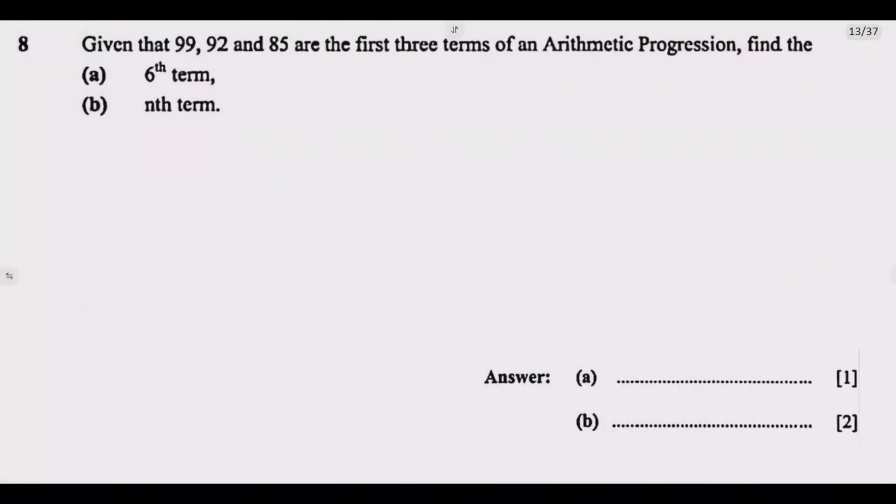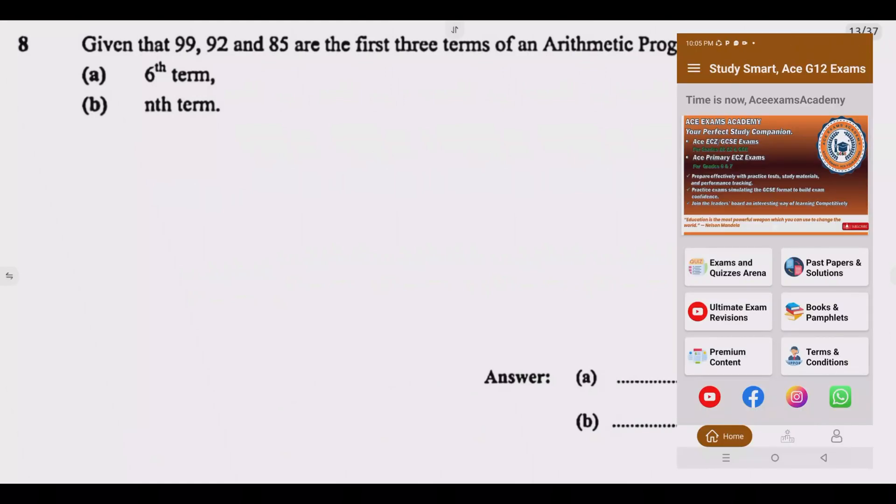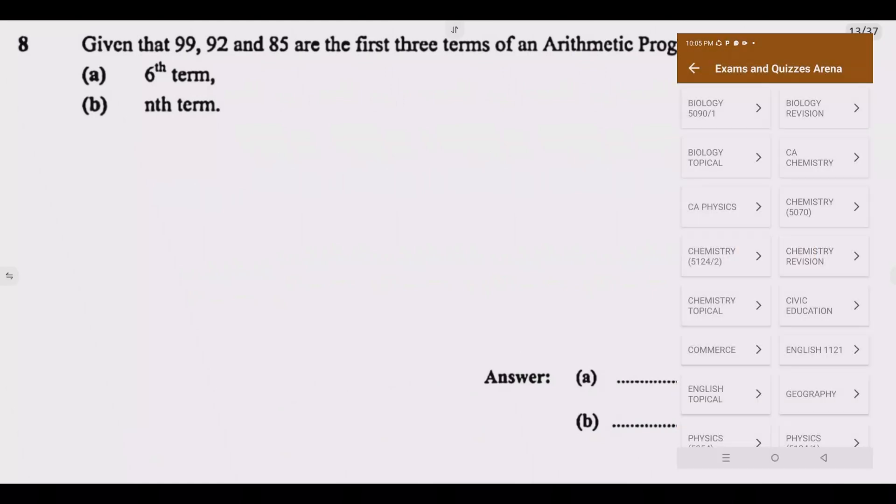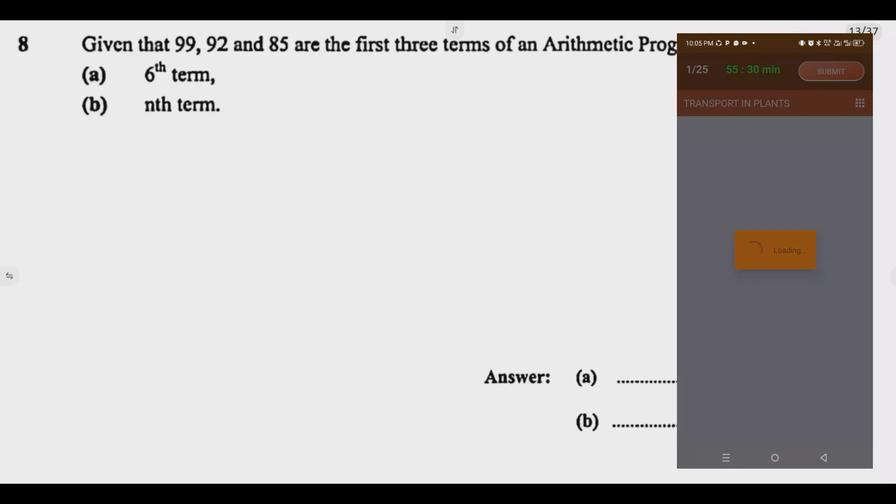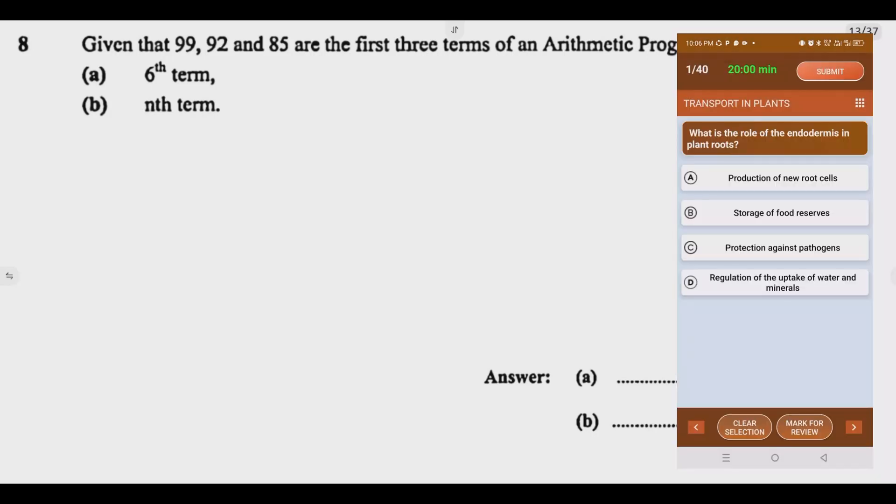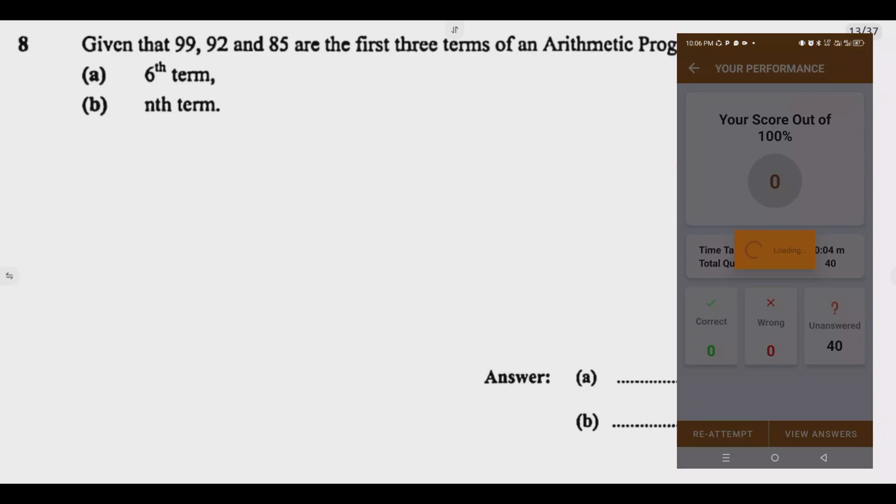Let's look at question 8. Given that 99, 92, and 85 are the first three terms of an arithmetic progression, find the (a) sixth term and (b) the nth term. There is always a question on arithmetic progression in paper 1.